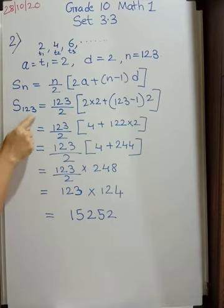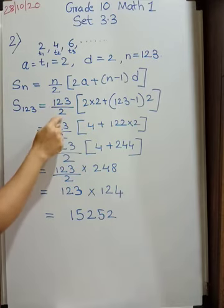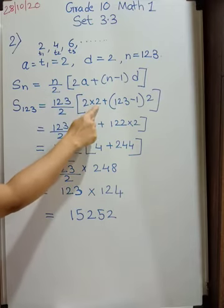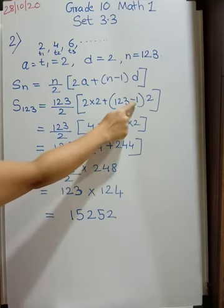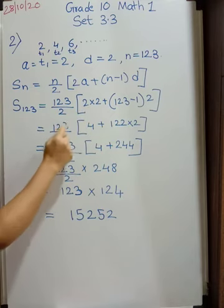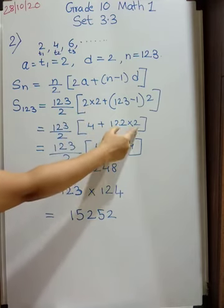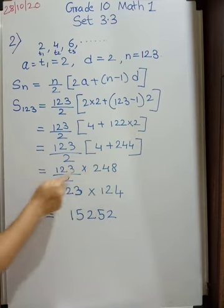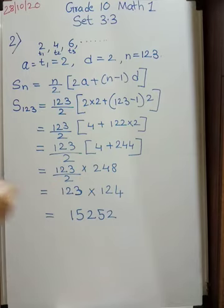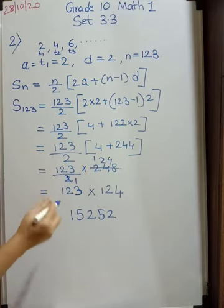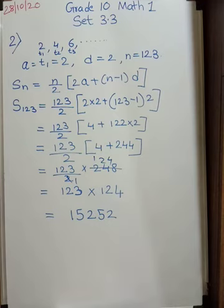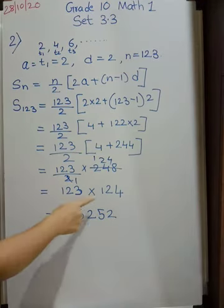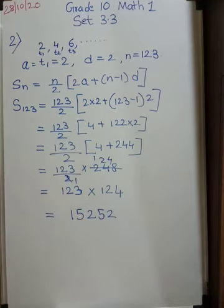We want to find S123 which is equal to N is 123 upon 2 into 2 as it is. A is also 2. So 2 into 2 plus N is 123 minus 1 into D is also 2. So we are left with 123 by 2 in bracket 4 plus 122 into 2. Product of this is 244. 4 plus 244 is 248. So you have 123 by 2 into 248. Now divide this. You have two 1s are and two 124s are. So you have 123 into 124 which is equal to 15252. So you will be writing at the end. The sum of the first 123 even numbers is 15252.